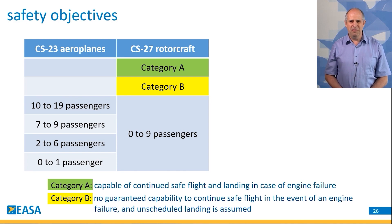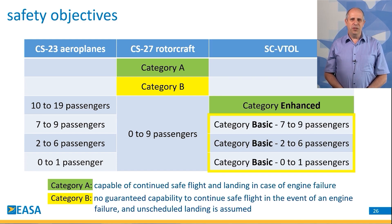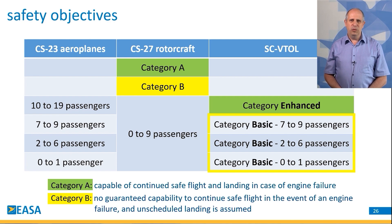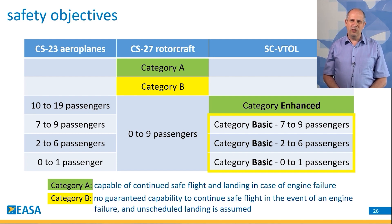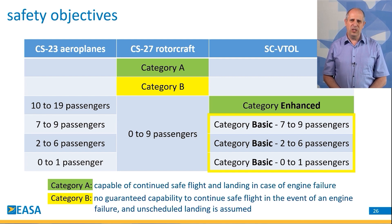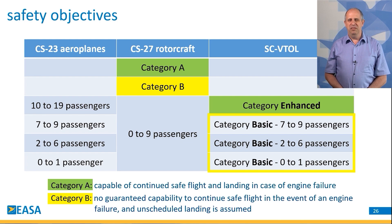And Category B, where in case of the same failure, a non-scheduled landing has to be assumed. So for VTOL aircraft, we combine both approaches. We have introduced a category Enhanced, which corresponds to Category A of rotorcraft, and a category Basic, corresponding to Category B, with three different subcategories that depend on the number of passengers on board from 0 to 9, aligned with the categories from airplanes.